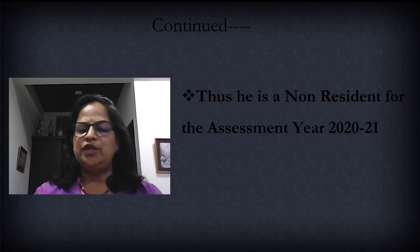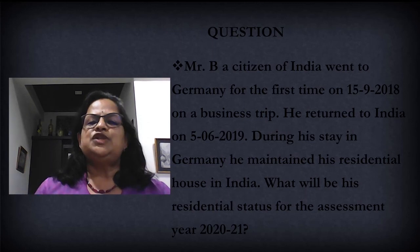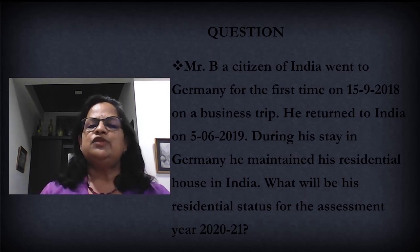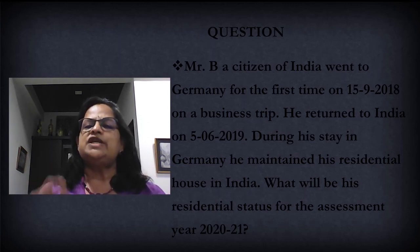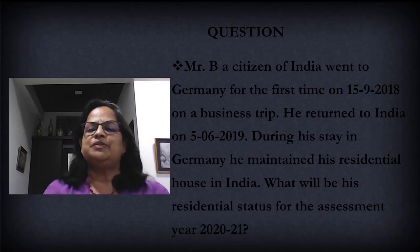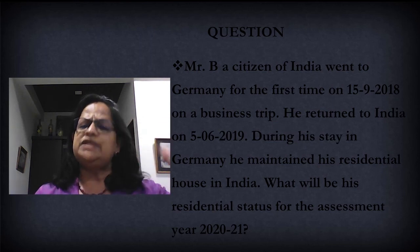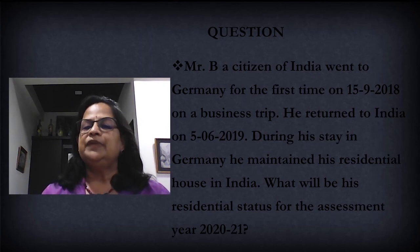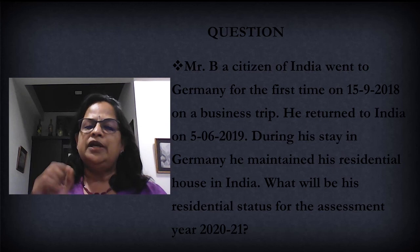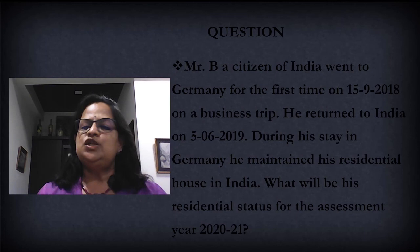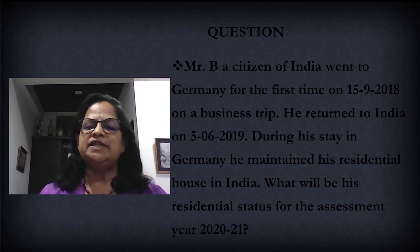The next question: Mr. B, a citizen of India, went to Germany for the first time on 5/9/2018 on a business trip. The question itself gives clues — it's the first time he is going out to Germany, meaning till 2018 he was a resident. You can avoid certain steps based on the clue. He returned to India on 5/6/2019 — June 5th he is returning in 2019.